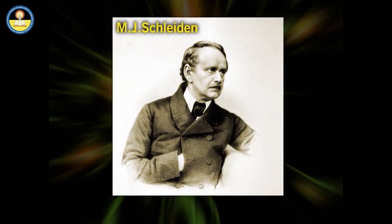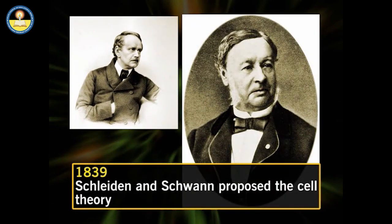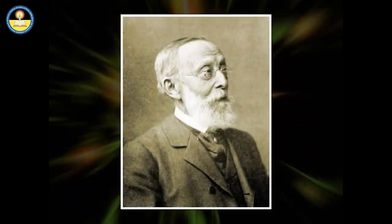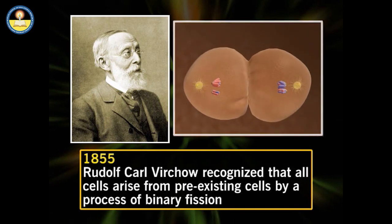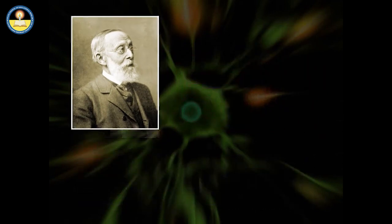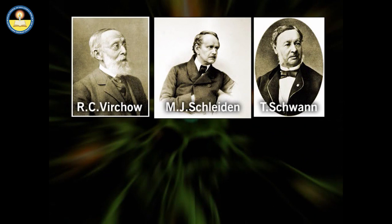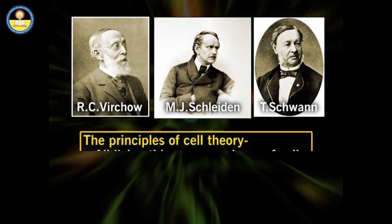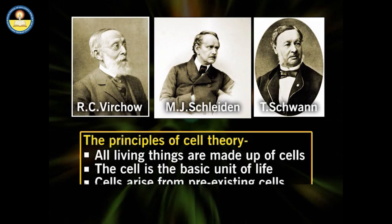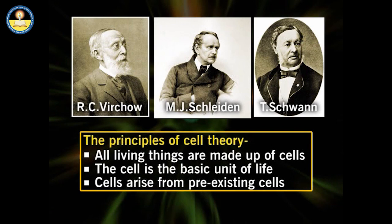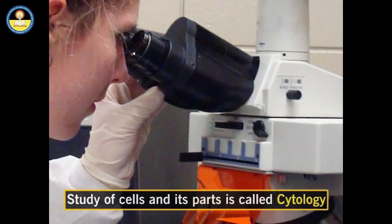In 1838, German botanist Matthias Jacob Schleiden found that all plants are composed of cells. Similarly, in 1839, Theodor Schwann proved that animals are also made up of cells. Rudolf Karl Virchow, a biomedical scientist, in 1855, was the first to recognize that all cells come from pre-existing cells by binary fission. These three scientists together put forward the principles of cell theory: all living things are made up of cells; cells form the basic unit of all living organisms; and all cells come from pre-existing cells. The study of cells and their parts is called cytology.